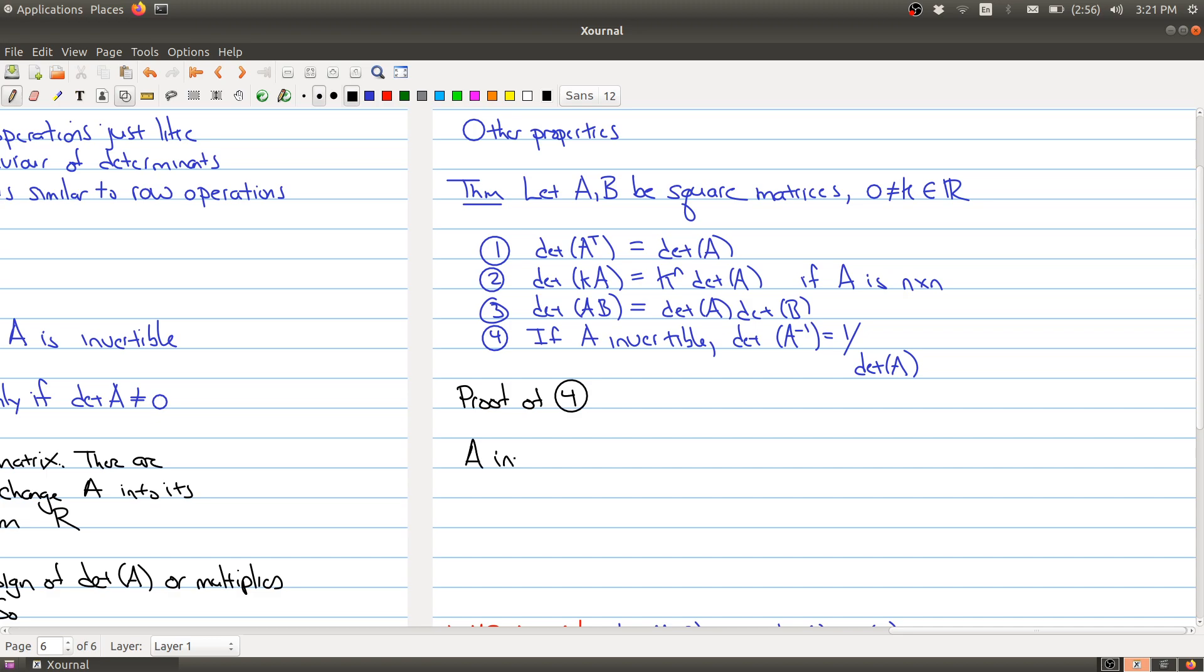A invertible means that A times A inverse is equal to the identity matrix. So by statement 3, what we have is that 1, which is equal to the determinant of the identity,